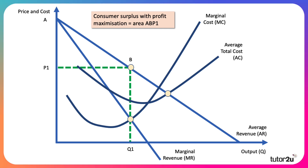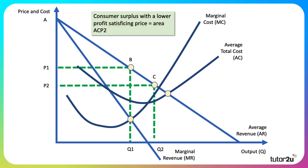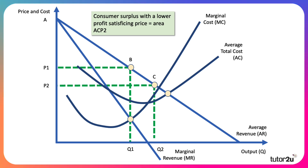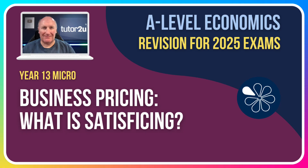In the diagram, P1Q1 is the profit-maximising equilibrium, giving a consumer surplus of area A, B, P1. Whereas if you satisfice — say you drop the price to P2 and sell a bigger output Q2 — you can still make profit because P2 is bigger than average cost. But this time, consumer surplus goes up to area A, C, P2. So if businesses move away from pure profit maximisation towards a satisficing price, most of the time consumer welfare improves — but not always.